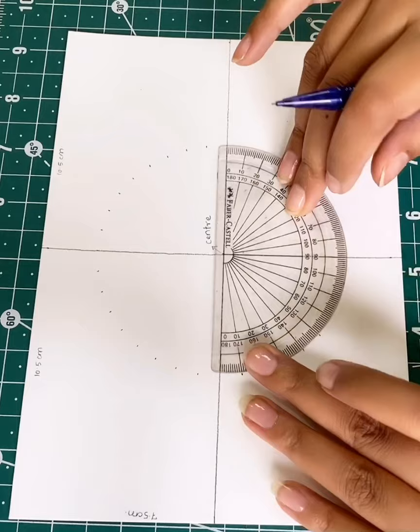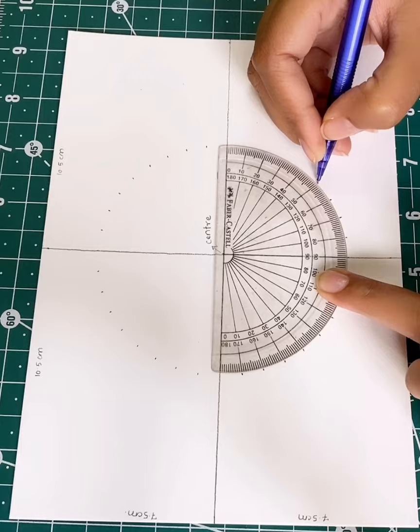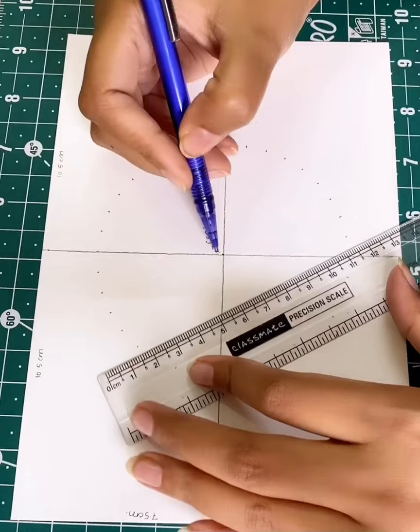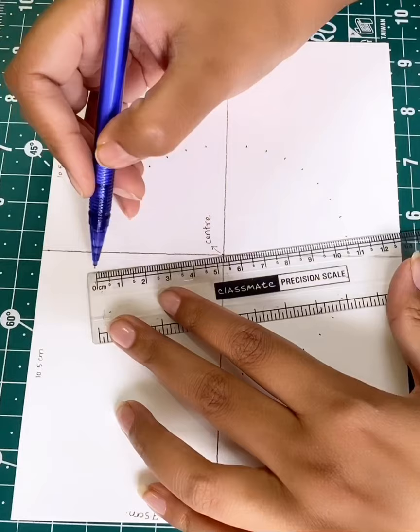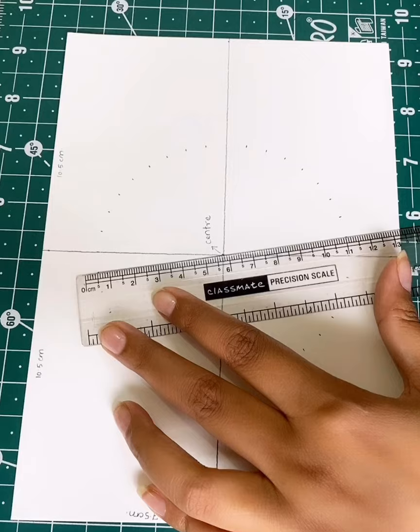I'll repeat the process on the other side as well. This step is very important and we must mark the points very carefully. Now I'll connect each point with the center. This should be done very precisely, and if we fail to do so, we'd not be able to achieve uniformity in the mandala patterns.